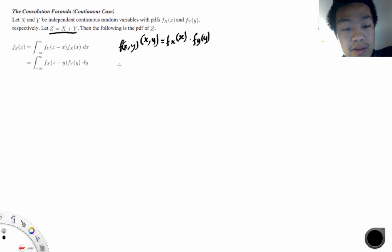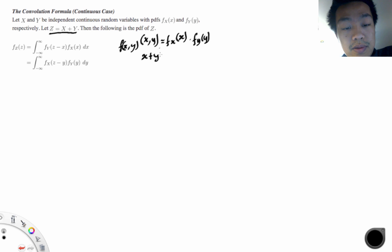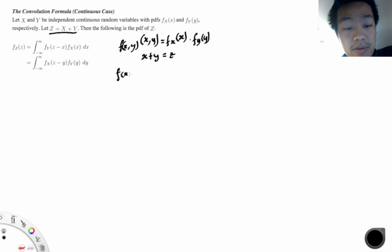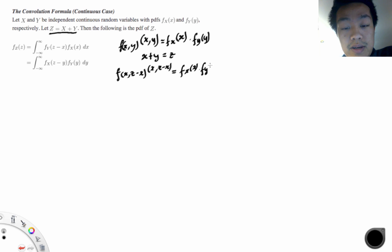Now let's carry that intuition into our problem. We have x plus y equals z. This can be rewritten using the theorem as the joint distribution where y equals z minus x. So we have fx of x times fy of z minus x.